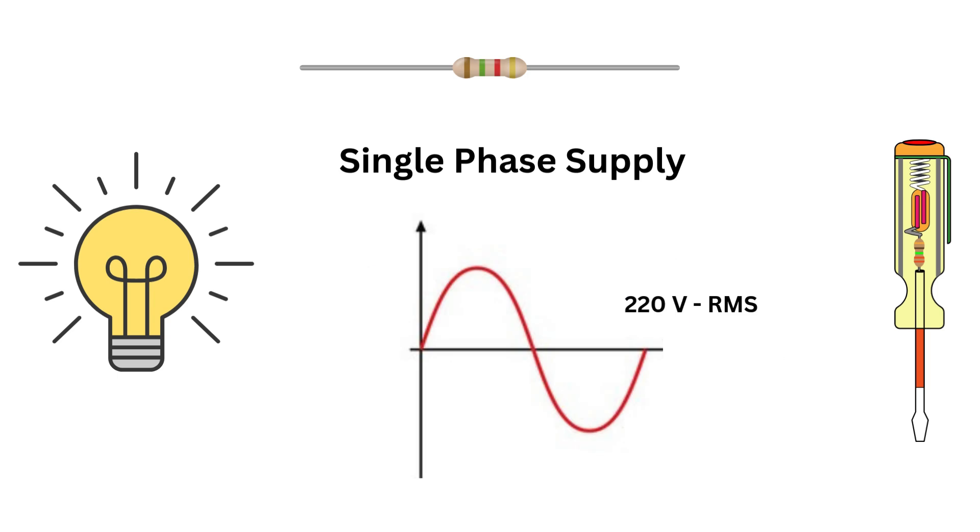Here's something important, the 220 volt we mentioned is the RMS voltage, not the peak voltage. The actual peak is around 311 volt. But let's save that detail for another video.